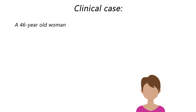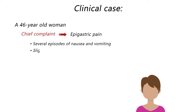A 46-year-old woman is brought to the emergency department with a complaint of one day of severe epigastric abdominal pain radiating to her back. She notices several episodes of nausea and vomiting over this period of time. She has experienced milder pain in the past, especially after heavy meals, but it always went away after 3-4 hours. This time the pain was severe and intolerable and didn't improve, so her family brought her to the emergency department.